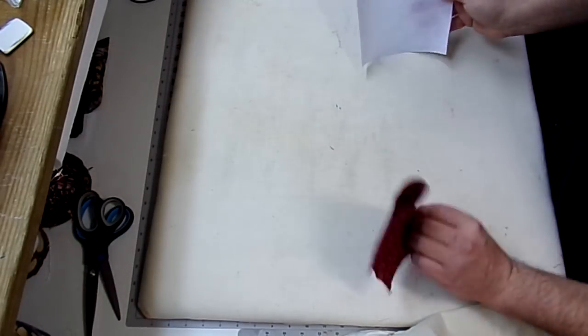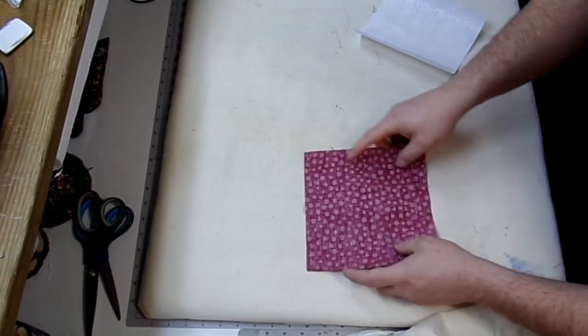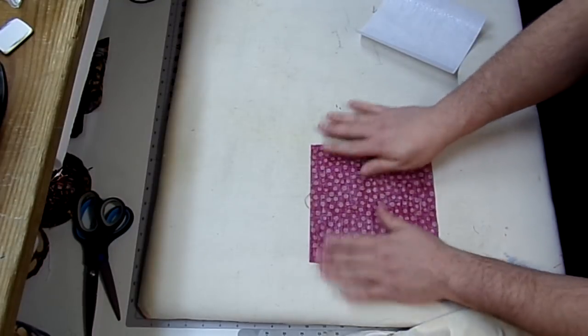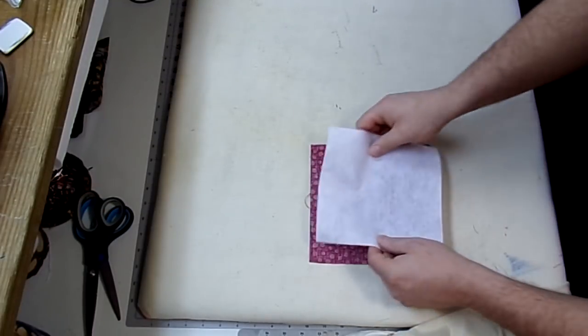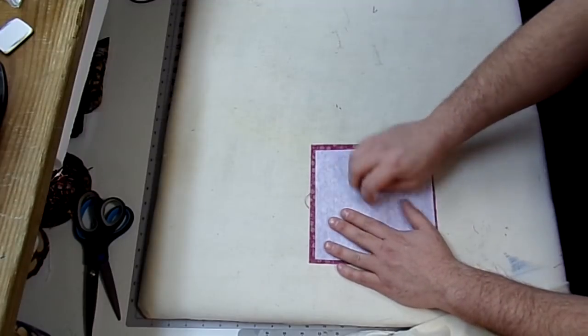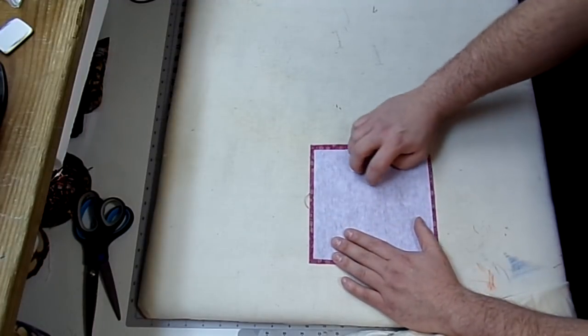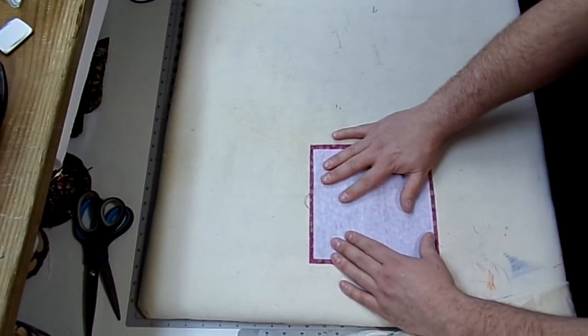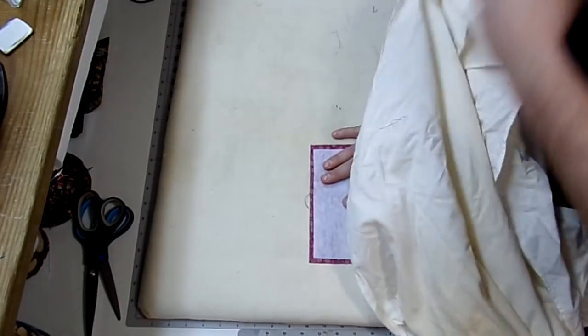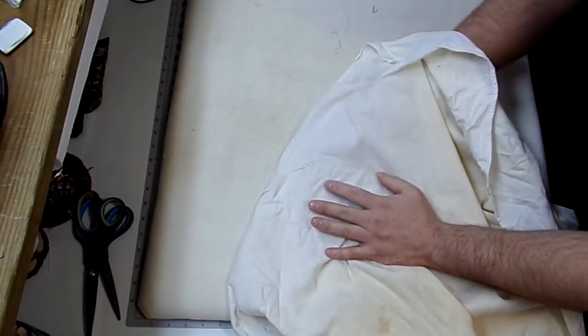So now I'm just going to set this off to the side. I'm going to grab my lining fabric, and I'm going to lay that face down. I'm going to center my craft fuse on top of that. That looks good. Cover with my pressing cloth and iron.